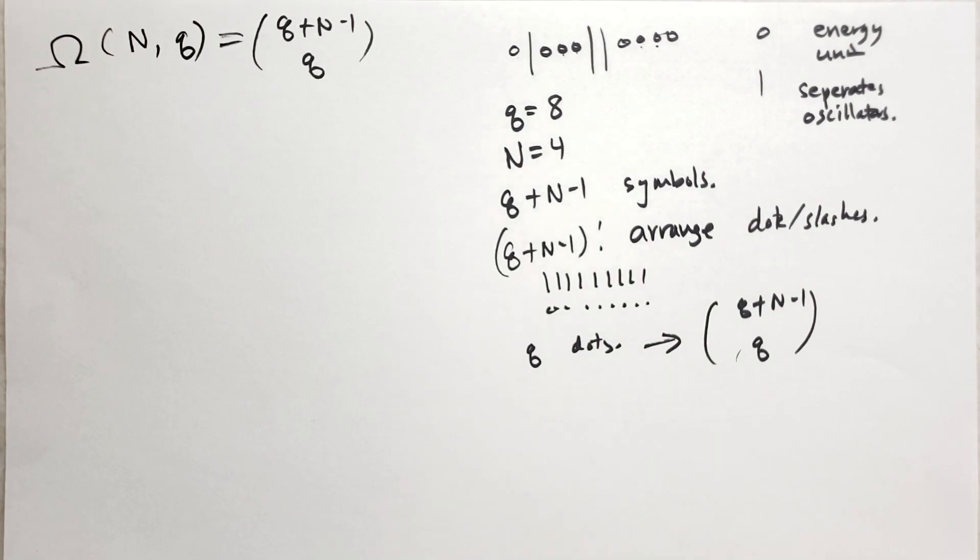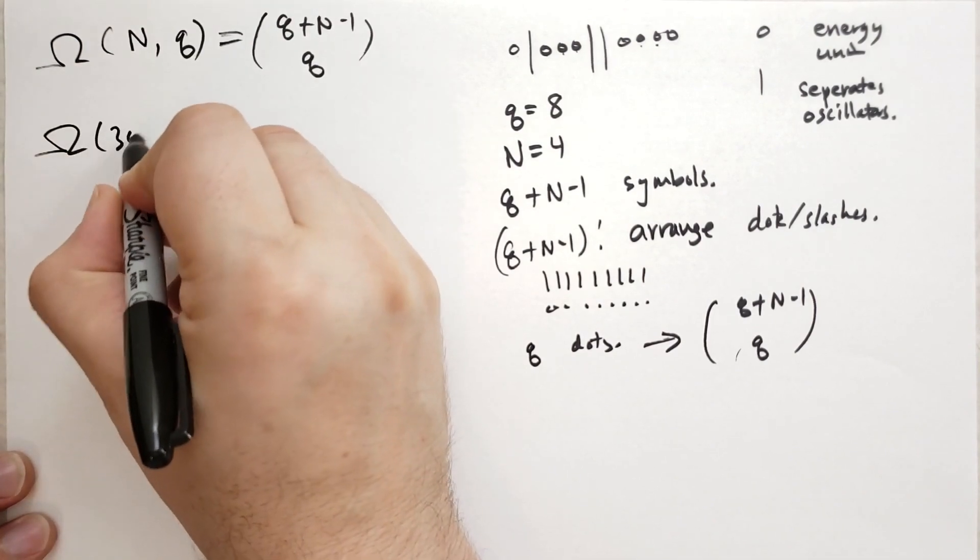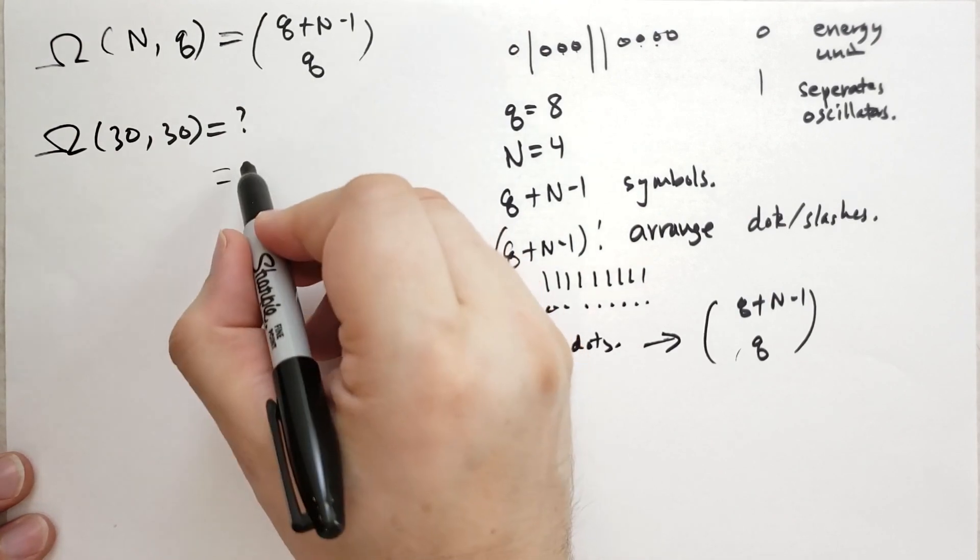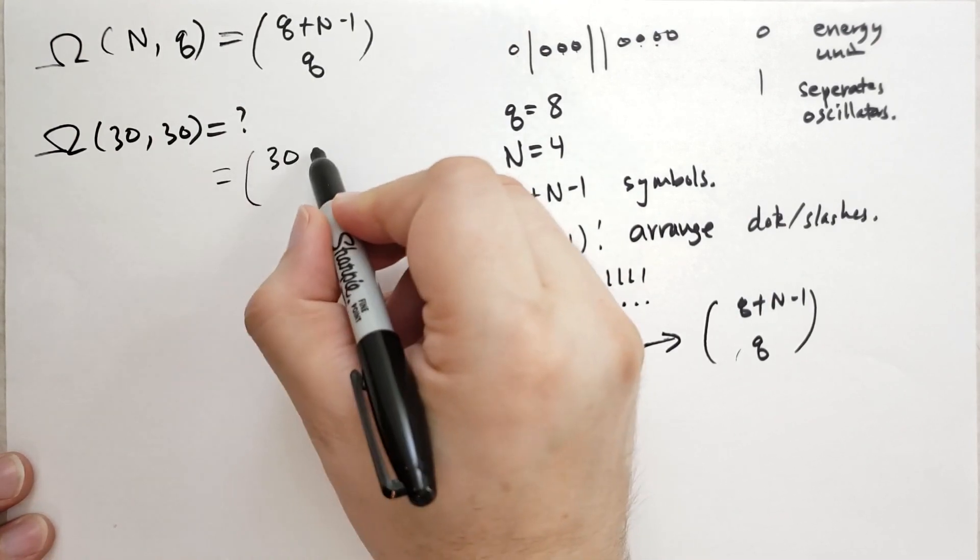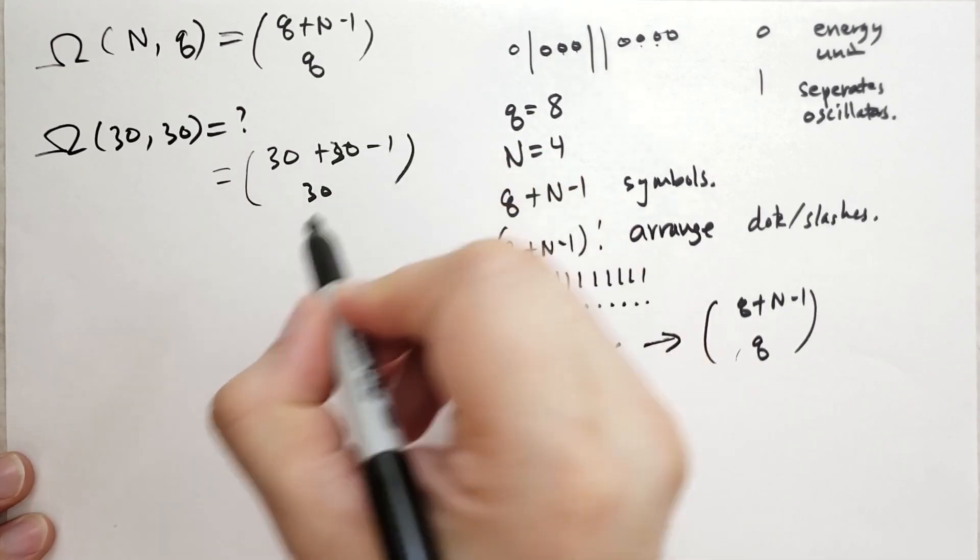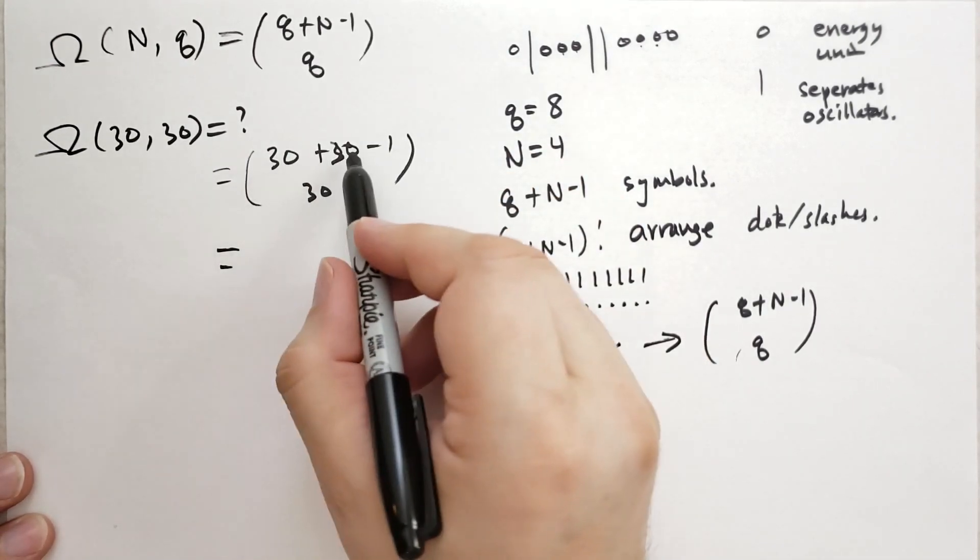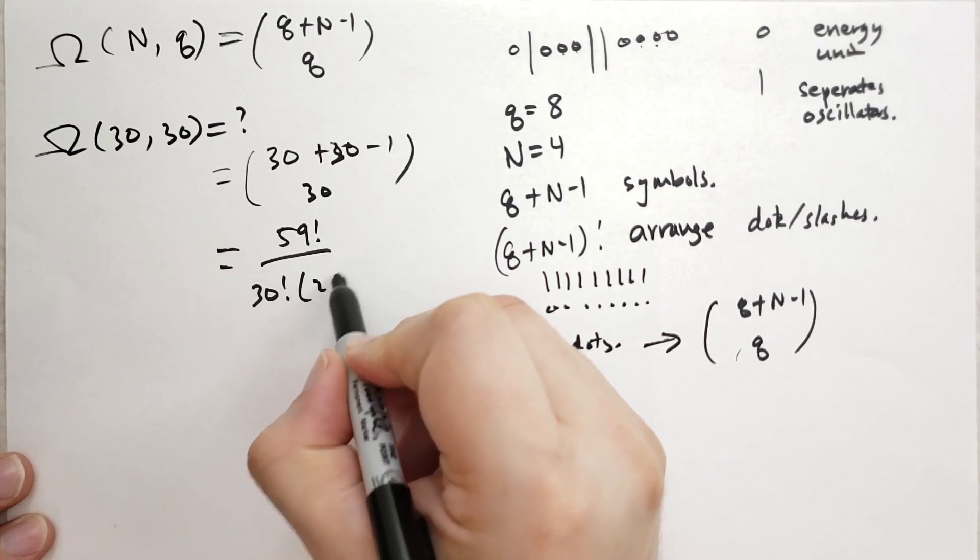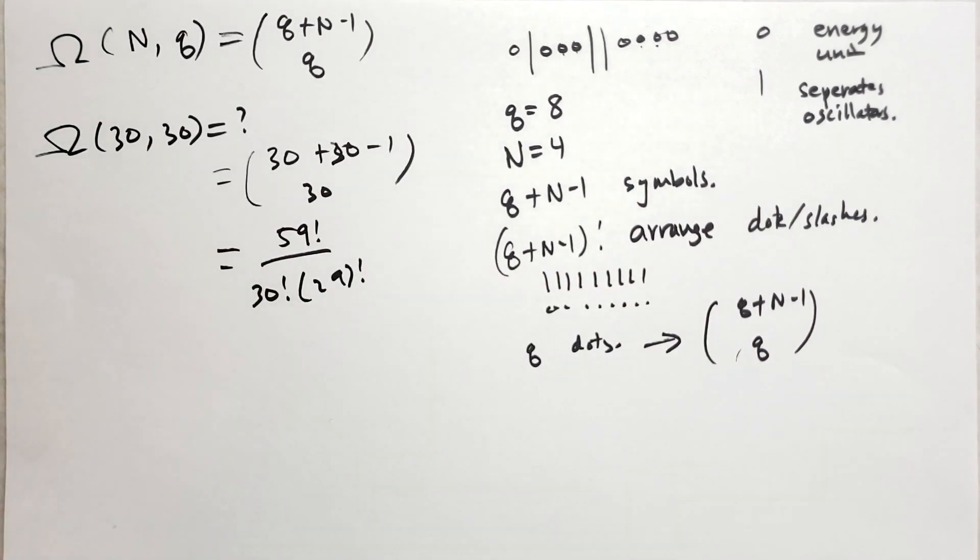Problem 2.6: calculate the multiplicity of an Einstein solid with 30 oscillators and 30 units of energy. So basically, what is the value of this? And I'm going to give you a heads up, it's going to be a large number. 30 plus 30 minus 1 choose 30. So you're going to get 59 factorial divided by 30 factorial divided by 29 factorial. So you're going to need a calculator to solve that. If you want to sit down and multiply those numbers out in your head, you're a very special person. Maybe you'll do it on a piece of paper, several pieces of paper, if you want to calculate that.